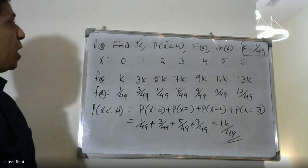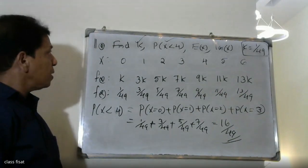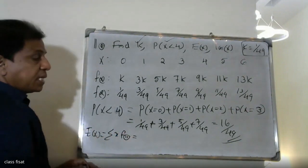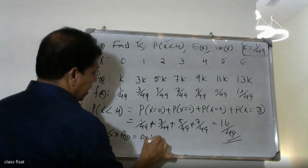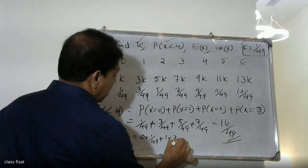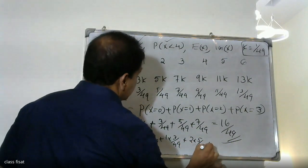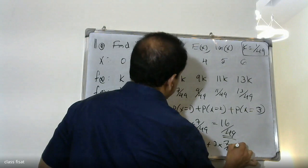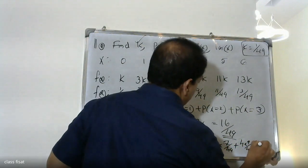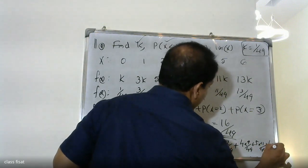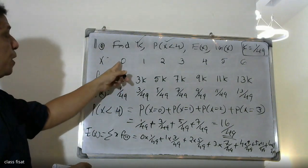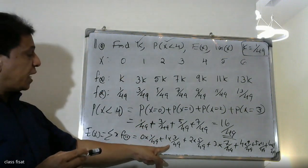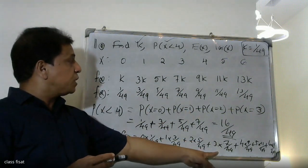For expectation of X: E(X) = 0×(1/49) plus 1×(3/49) plus 2×(5/49) plus 3×(7/49) plus 4×(9/49) plus 5×(11/49) plus 6×(13/49).